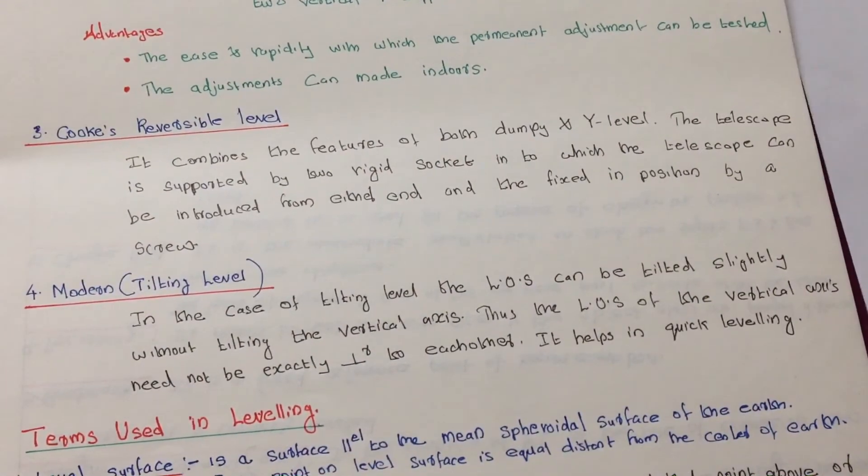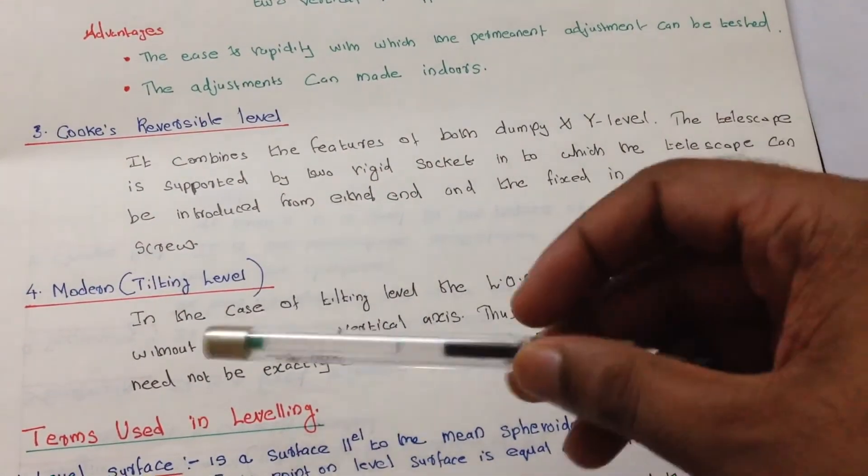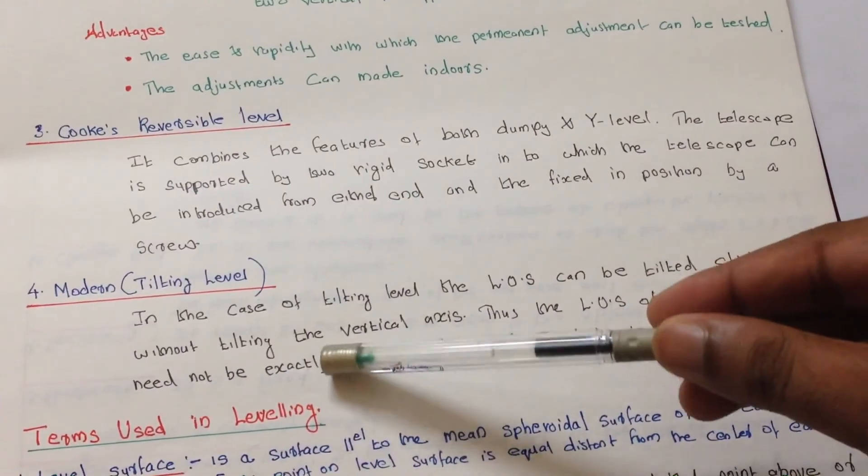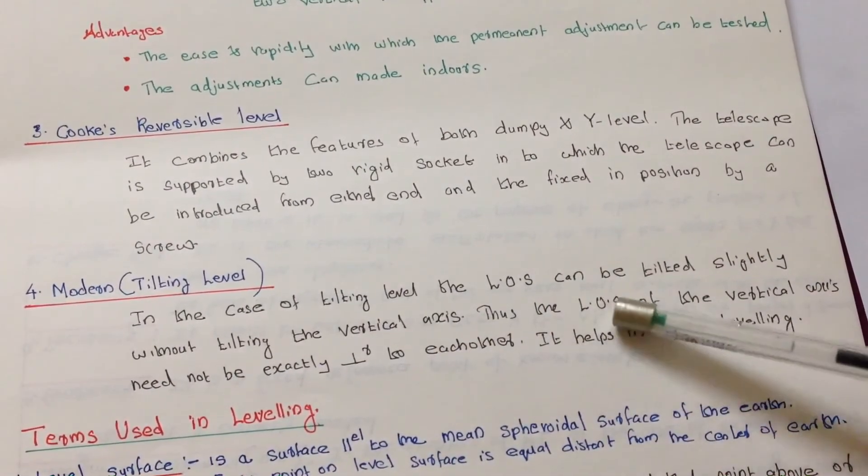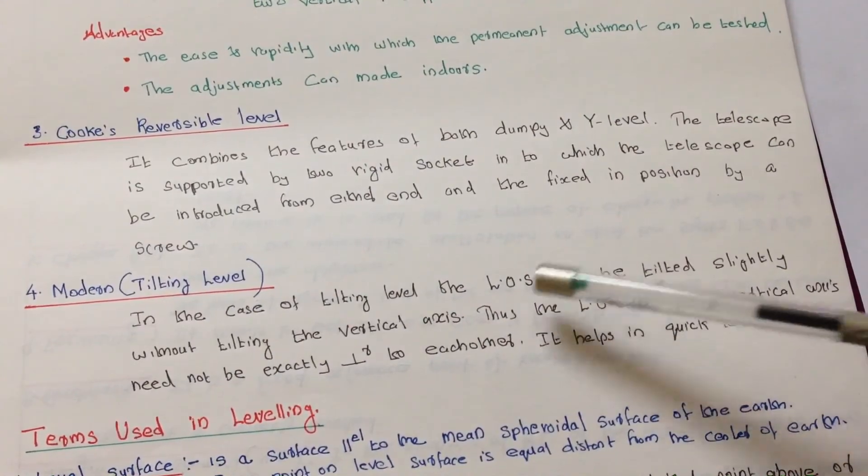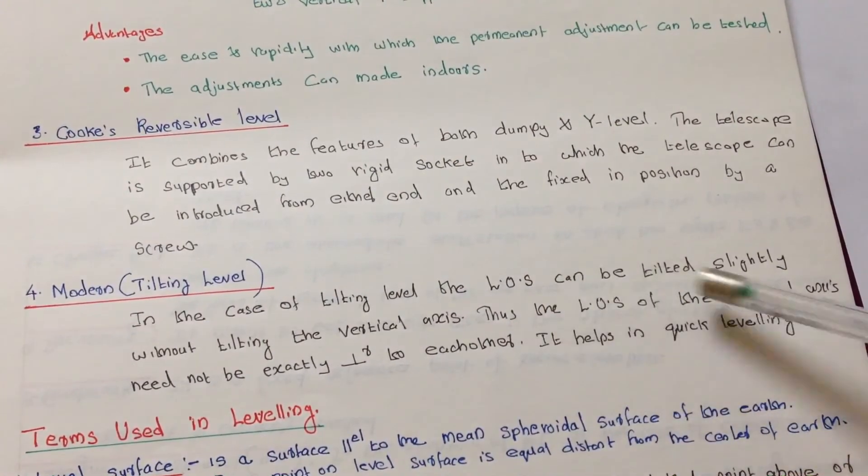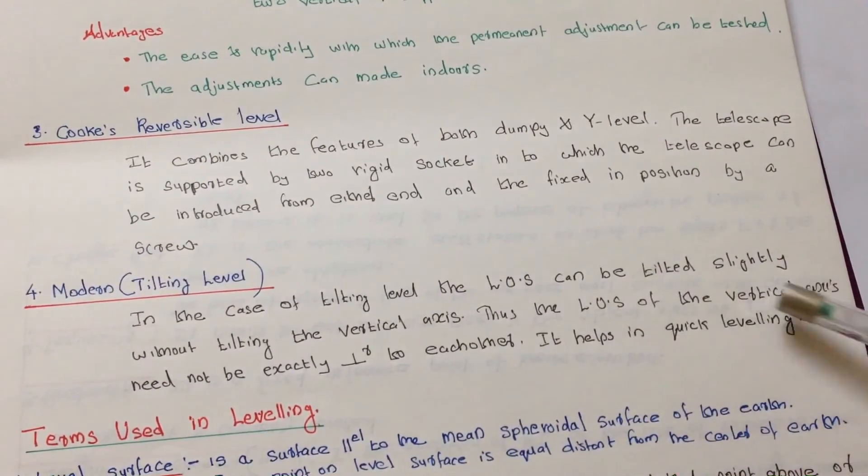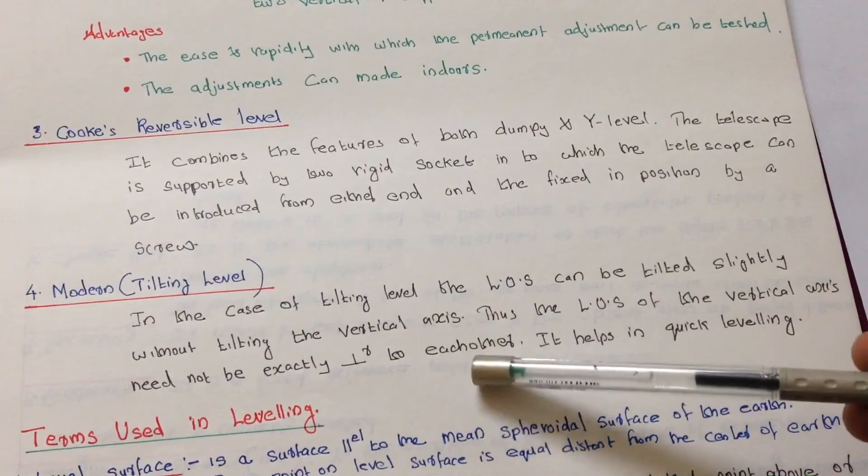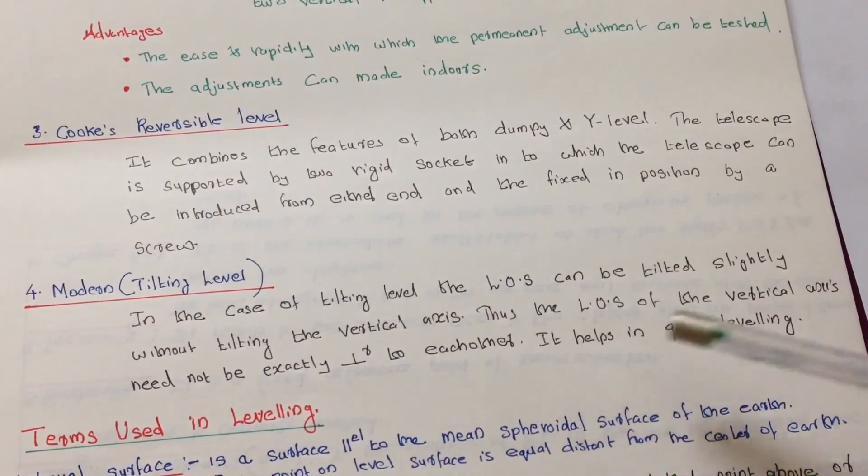In modern or tilting level, in the case of tilting level, the line of sight, LOS means line of sight, can be tilted slightly without tilting the vertical axis. Thus the line of sight and the vertical axis need not be exactly perpendicular to each other. It helps in quick leveling.